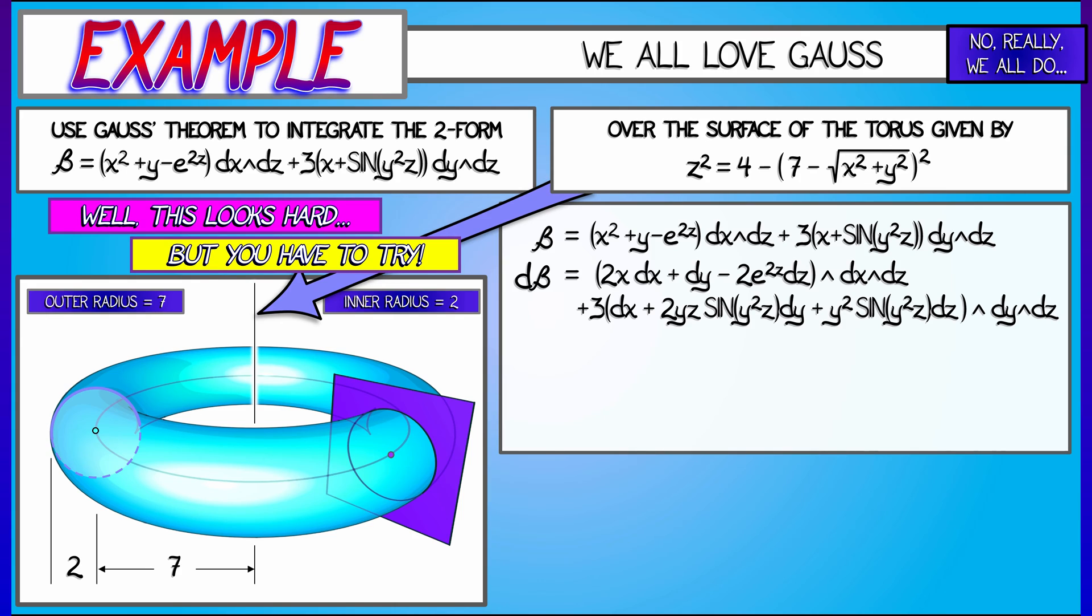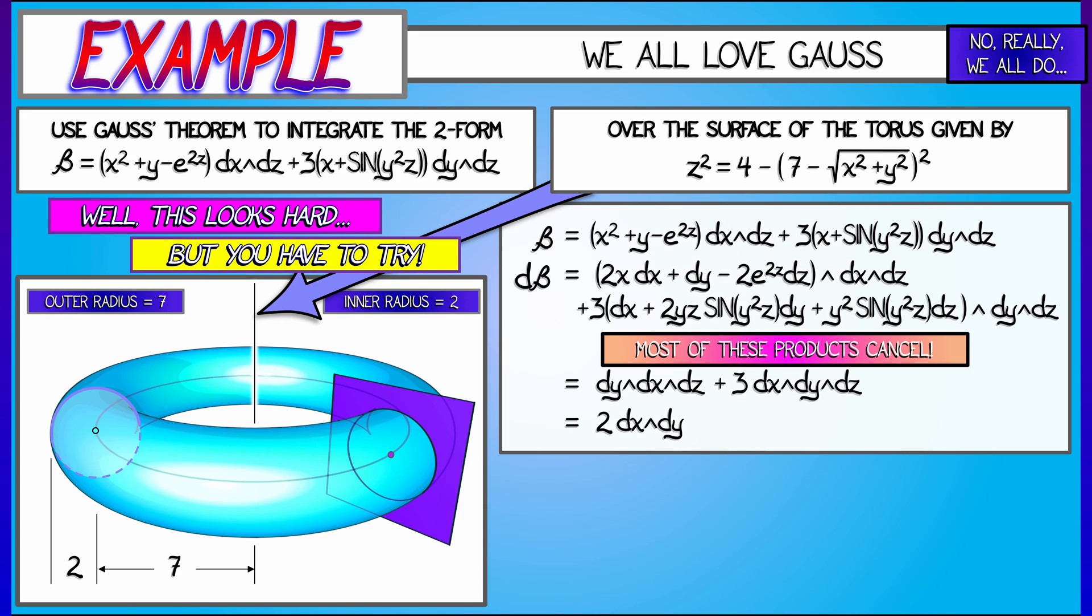Now, I'm looking at that and I'm seeing a whole lot of cancellation because of dy∧dy and dz∧dz and dx∧dx. In the end, what I get is dy∧dx∧dz plus 3 dx∧dy∧dz. Rearranging the order in that first basis three-form, I get 2 dx∧dy∧dz. That is twice the volume form.